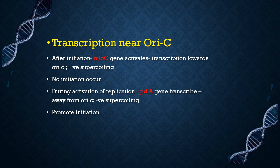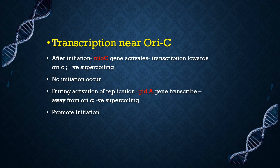Prokaryotic replication can also be regulated by transcription near oriC. Transcription at origins can regulate their accessibility to DnaA protein. After initiation, the mioC gene, which is located near oriC, is activated and transcribes towards oriC, creating positive supercoiling in oriC, decreasing accessibility of oriC towards other proteins so new initiations do not occur. During reactivation of replication, the gidA gene is transcribed away from oriC, creating negative supercoiling near oriC, which promotes initiation.